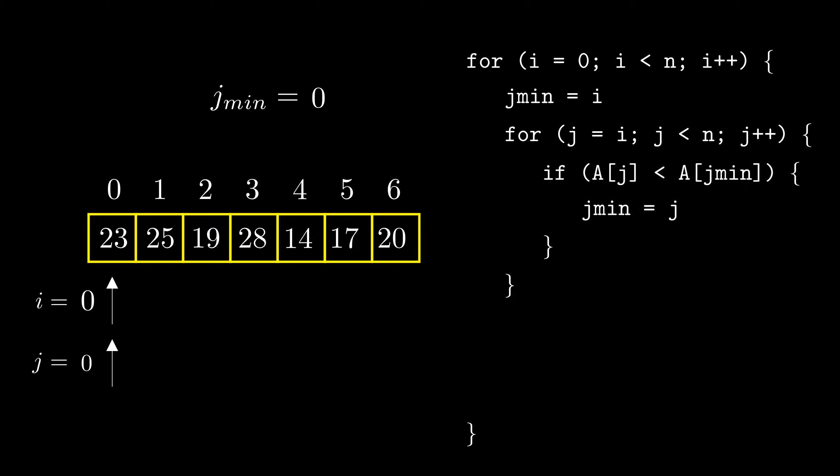So let's see with an example. We initialize jmin with 0 since, to begin with, 23 is the only element we have seen and so it is also the smallest element that we have seen. We increment j to 1. Is 25 smaller than 23? No. So we do nothing and increment j to 2. Is 19 smaller than 23? Yes. So we update jmin to 2 since 19 resides at index 2.